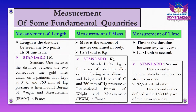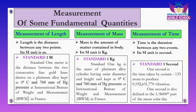Now let me explain the measurement of mass. Mass is simply the amount of matter contained in a body, and its SI unit is kg. One standard kilogram is the mass of a platinum alloy cylinder having equal diameter and height, also kept at zero degrees Celsius and 760 mm of Hg pressure at the International Bureau of Weight and Measurement in France.